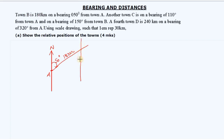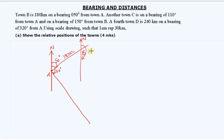We have another true north line here. Another town C is on a bearing of 110 degrees from town A, so from town A we measure 110 degrees clockwise to locate town C. The same town C is on a bearing of 150 degrees from town B, so at town B we measure 150 degrees clockwise, and that helps us locate the position of town C.